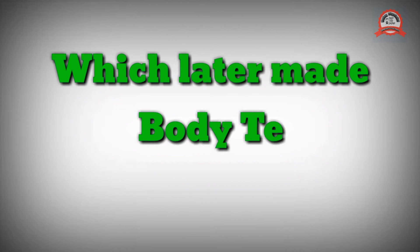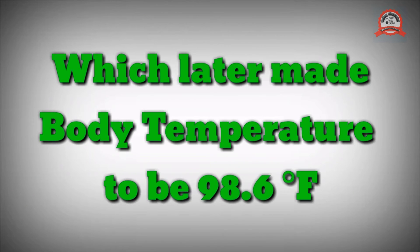He could easily mark degree lines by just bisecting each line several times. After the death of Fahrenheit in 1736, scientists calibrated his scale by choosing the upper point as 212 degrees as the boiling point of water, which later made 98.6 degrees Fahrenheit the body temperature.